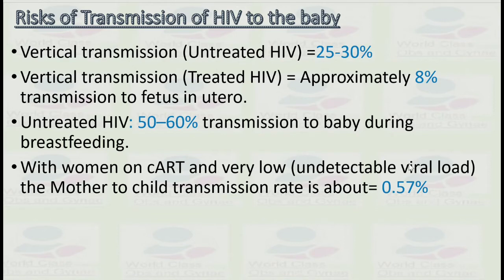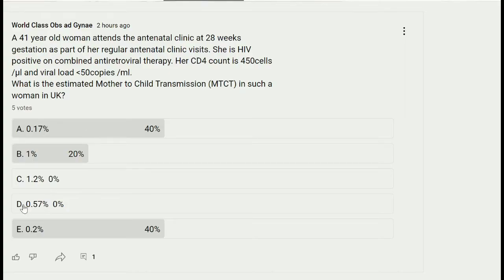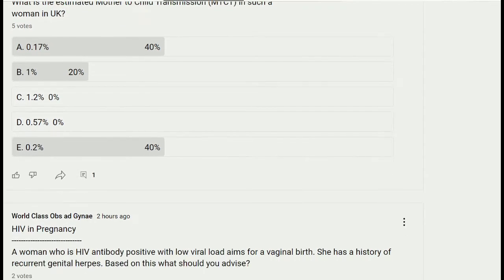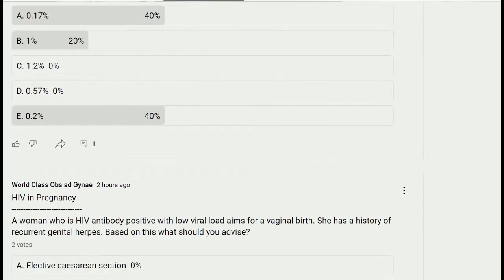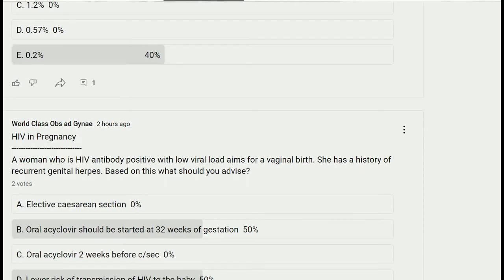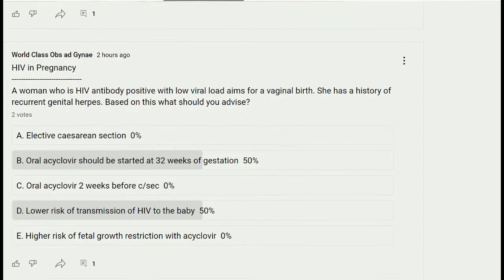You can see that the 0.5 percent figure is very important, and that is what is asked in this question. Looking at the options, the answer is option D — 0.5 percent. This flash card is taken from the BHIVA guideline for HIV in pregnancy.